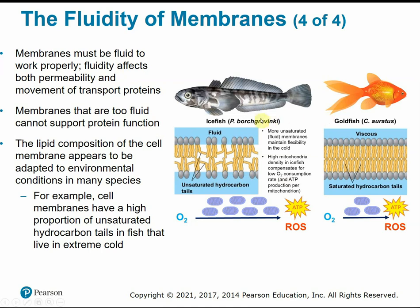For example, ice fish that live in extreme cold environments have more unsaturated phospholipids in their cell membrane, maintaining flexibility despite cold temperatures so the membrane remains fluid. Whereas goldfish, which typically reside in more moderate temperatures, have more saturated hydrocarbon tails in their phospholipids, giving them more viscous cell membranes.